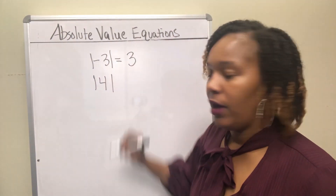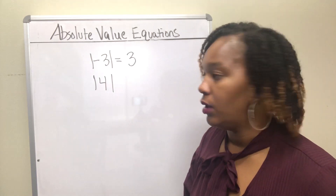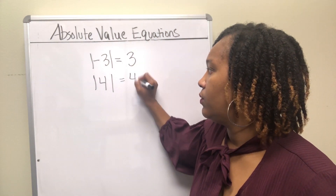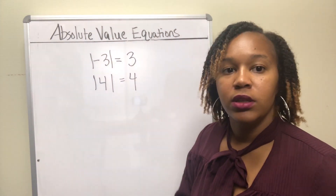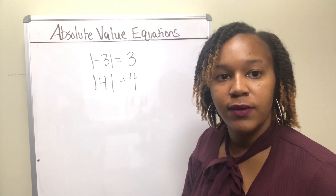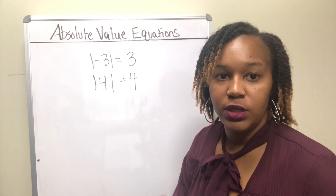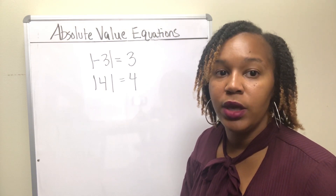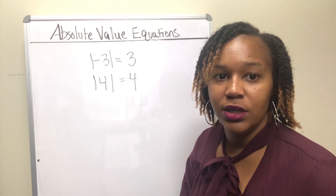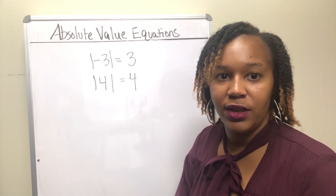What is the absolute value of 4? That's saying how far is 4 from 0 — that's 4 units from 0. So the absolute value of a positive number is just equal to that number itself, and the absolute value of a negative number is equal to that number positive. Keep that in mind so you can understand the process for solving absolute value equations.